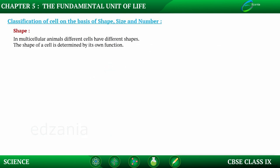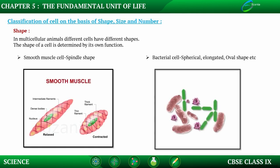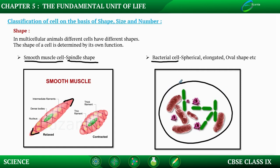In multicellular animals, different cells have different shapes, and the shape of a cell is determined by its function. The smooth muscle cell is spindle-shaped — long and pointed at both ends. Bacterial cells have many shapes: they may be spherical, elongated, oval, or rod-shaped.